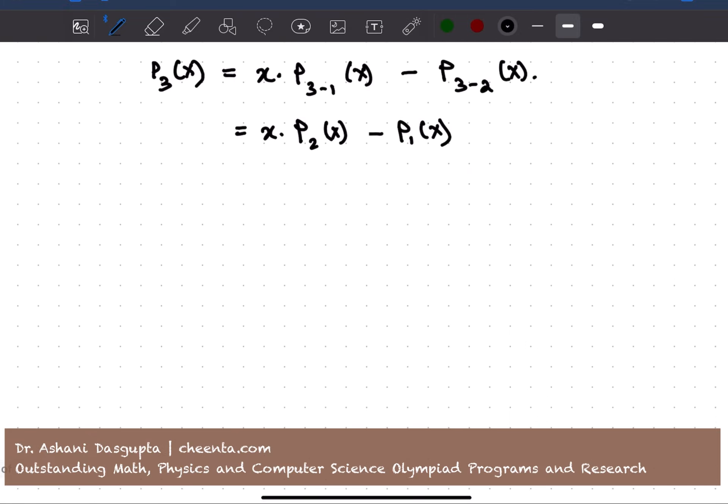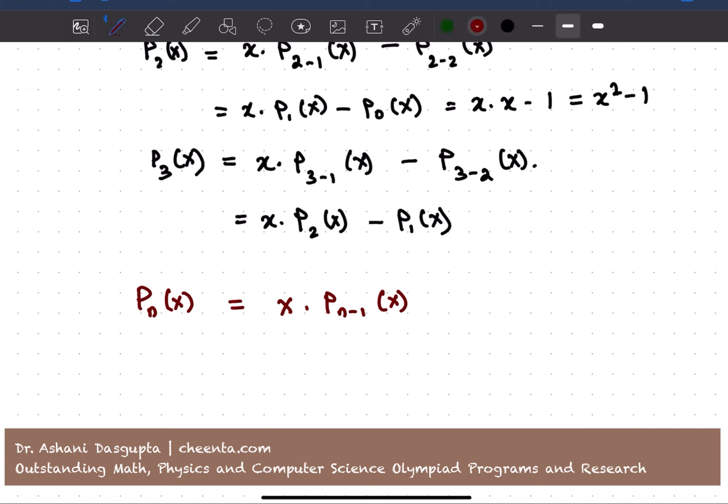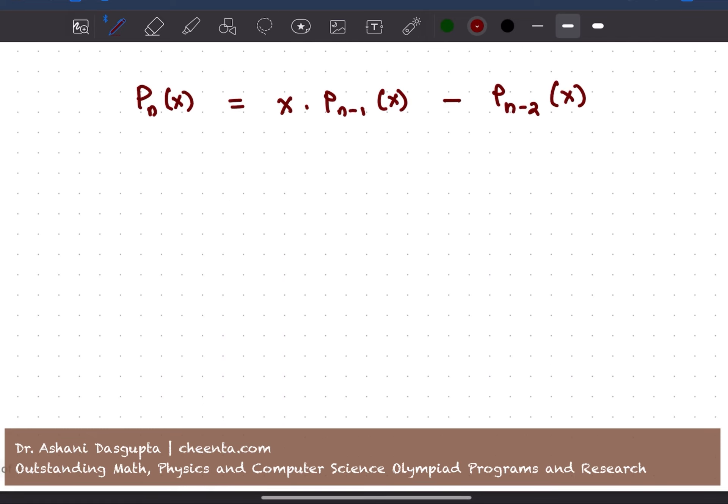So let's get back to this expression one more time. We have P_n(x) is equal to x times P_{n-1}(x) minus P_{n-2}(x). This is how the polynomials are defined. So let's plug in x equal to 0 directly in this expression. And let's see what happens. So we get P_n(0) is equal to 0 times P_{n-1}(x) minus P_{n-2}(x). So this part becomes 0, 0 times anything is 0. So P_n(0) is equal to negative P_{n-2}(0).